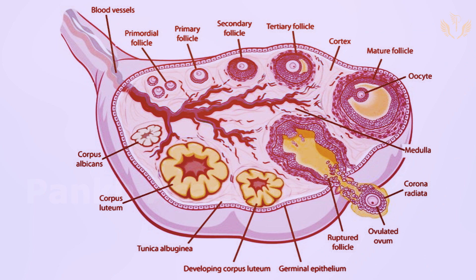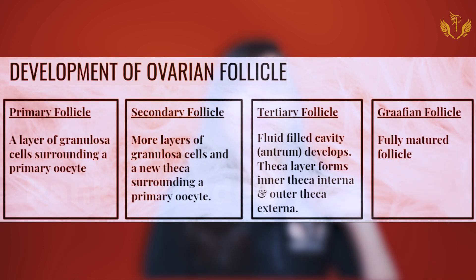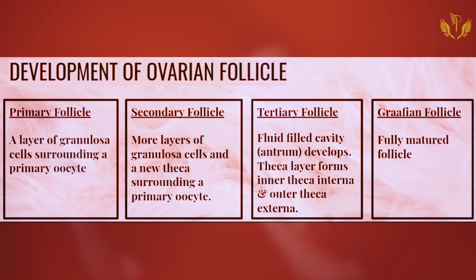The ovum is found in the ovary. The inner region is called the medulla, and blood vessels are connected there. Now, remember these four follicle stages: primary follicle, secondary follicle, tertiary follicle, and Graafian follicle. The primary follicle has a single layer of granulosa cells surrounding a primary oocyte. The secondary follicle has more layers of granulosa cells and a new theca surrounding the primary oocyte.